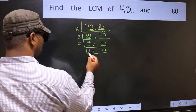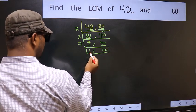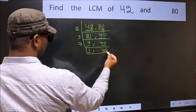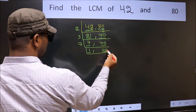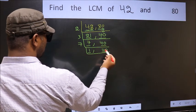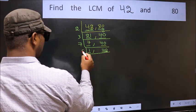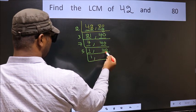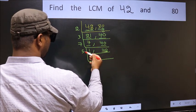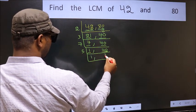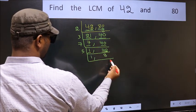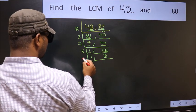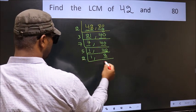Now we got 1 here, so focus on the next number 40. Last digit 0, so directly take 5. When do we get 40 in the 5 table? 5 times 8 is 40. Now here we have 8 — 2 times 4 is 8.